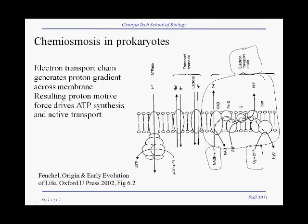This is aerobically respiring bacteria. We have oxygen serving as a terminal electron acceptor, and oxygen is reduced to water. In the process, components of the electron transport chain are actively pumping protons against a gradient — this is active transport of protons across the membrane. They're using redox energy to transport protons, generating a proton gradient and proton motive force.